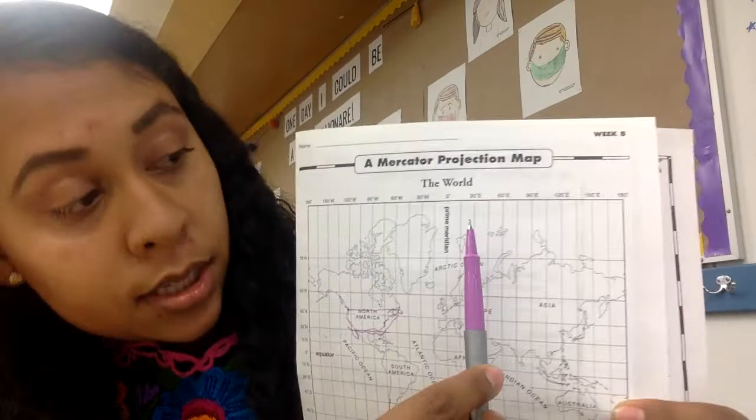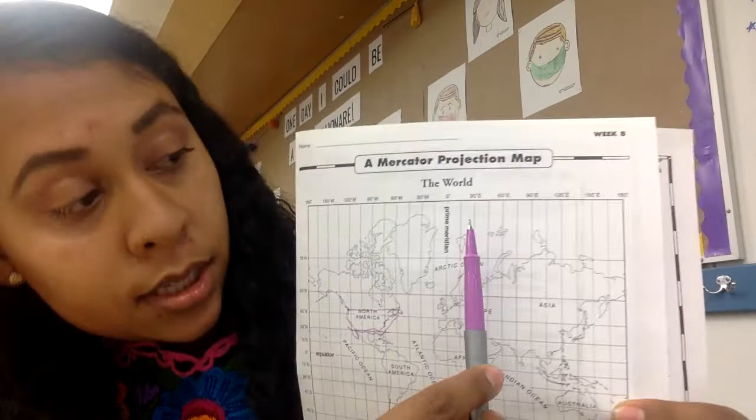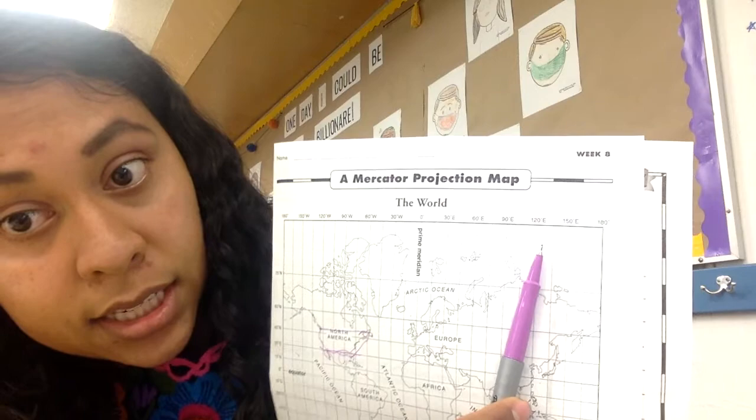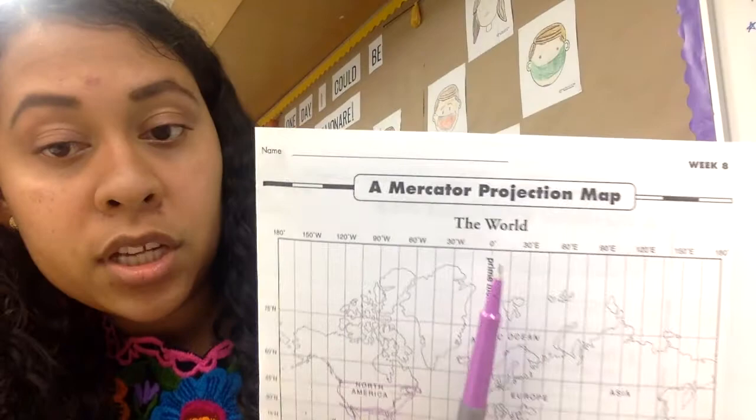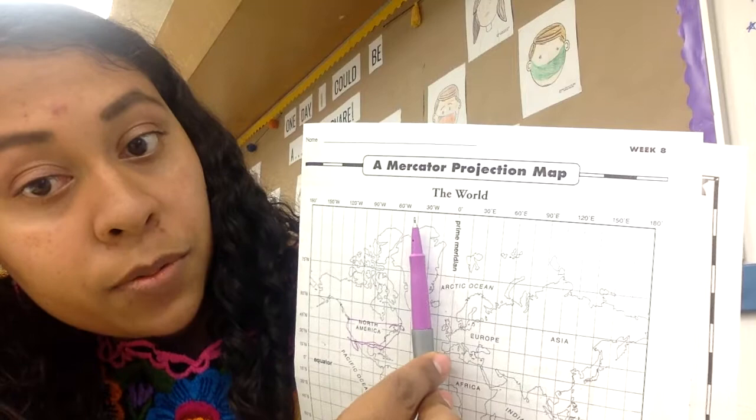Going east: zero, 30 east, 60 east, 90 east, 120 east, 150 east, 180 east. And then going the opposite direction from the prime meridian at zero degrees: 30 west, 60 west, 120 west, 150 west, 180 west.